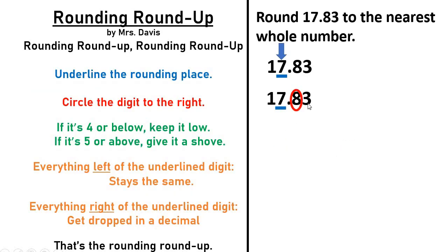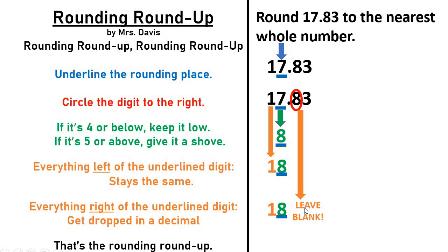So I'm using this circled digit to decide where it falls on the number line and whether it's going to stay at seven or go up to eight and eighteen. The rule is: if it's four or below, keep it low. If it's five or above, give it a shove. The circle digit in this case is an eight, and that is above five. Since the circle digit is above five, we give the underline digit a shove — so if it's four or below, keep it low; if it's five or above, give it a shove, which means this goes up one. Everything left of the underline digit stays the same. Everything right of the underline digit gets dropped in a decimal. Since we're rounding to the whole number, we're not going to have any decimal part left over — so we just leave it blank. And that's the rounding roundup.